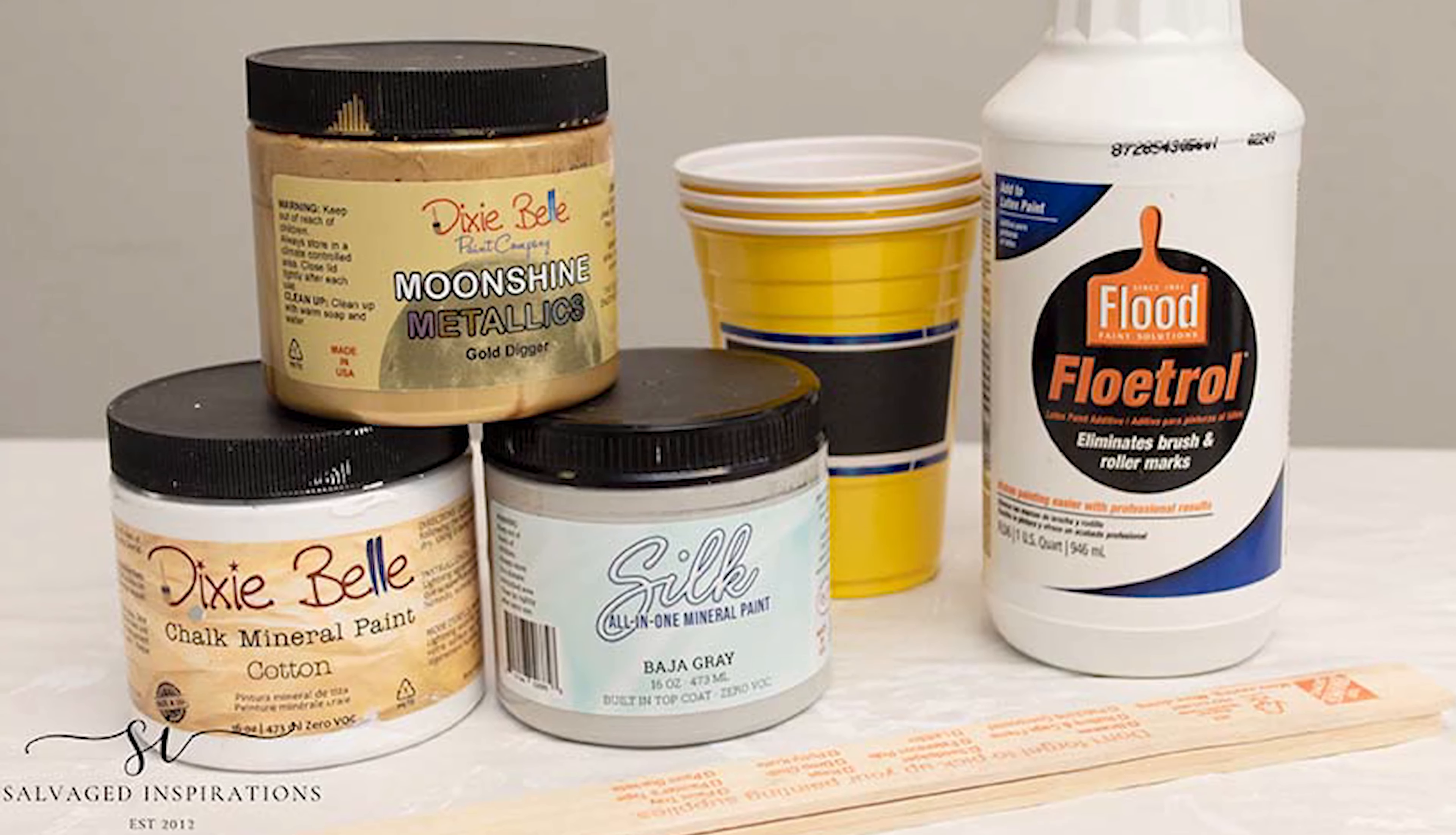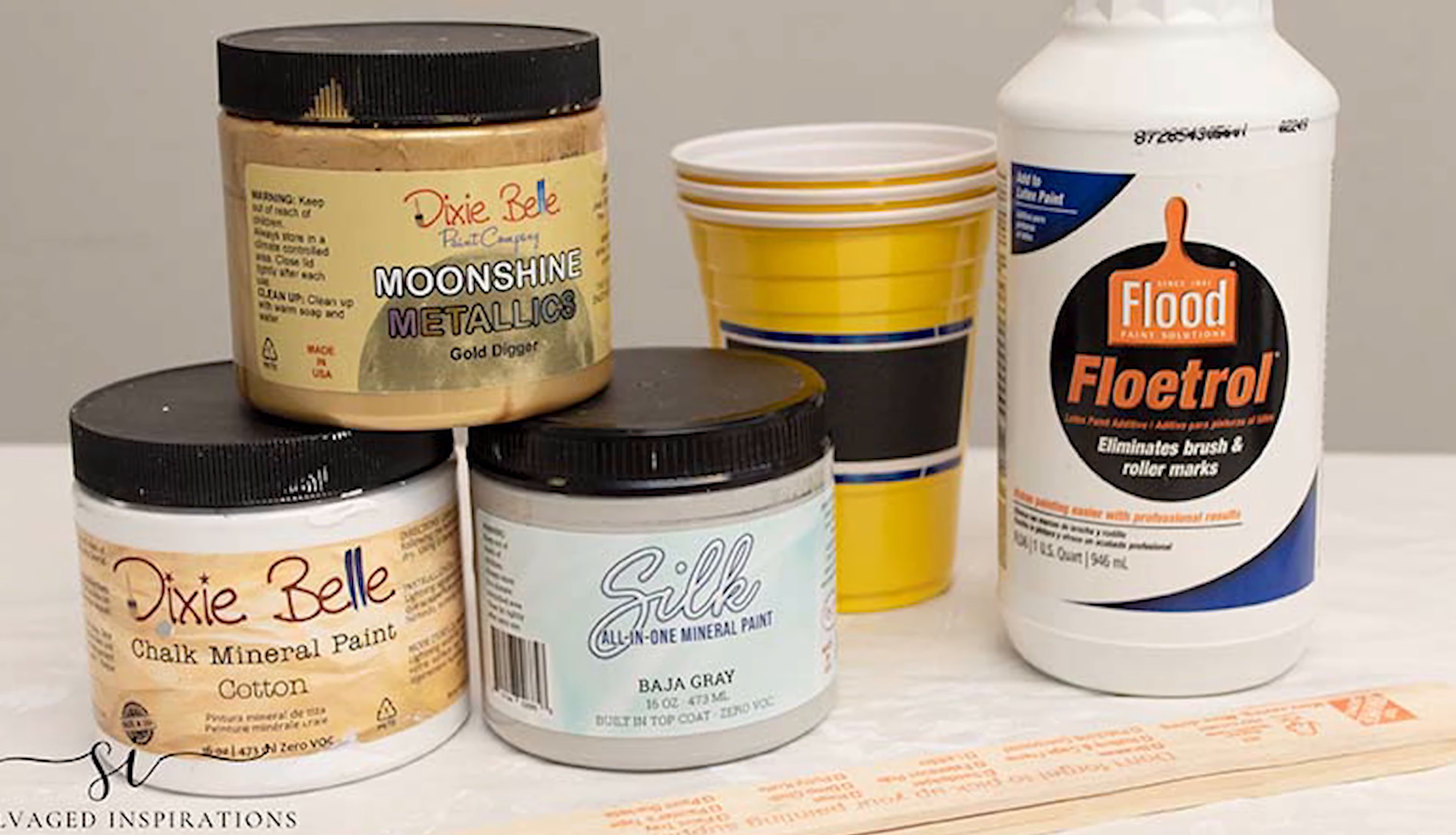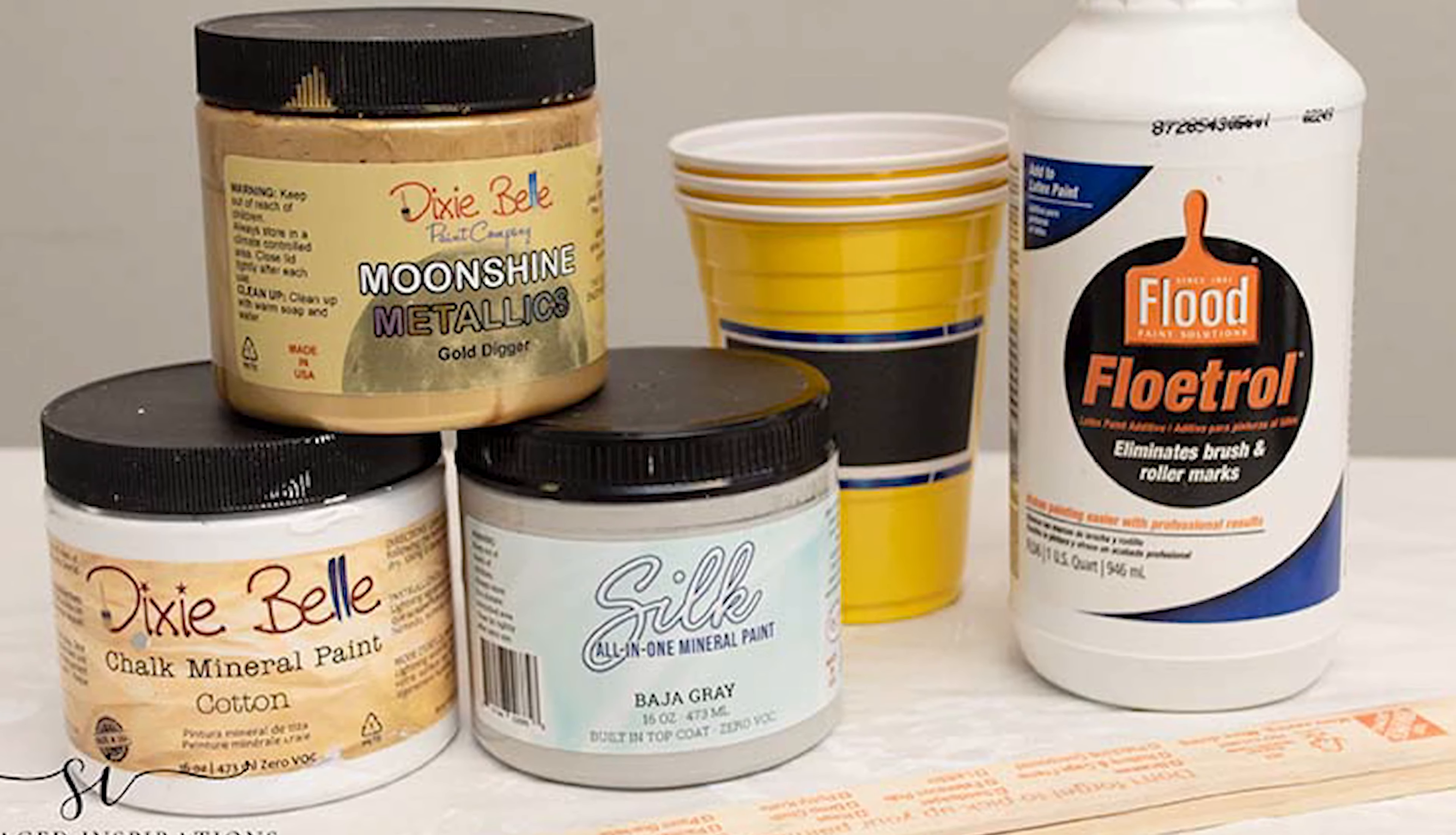To get the flow the paint needs for this finish, I mix it with Floetrol. For a beginner's paint pour, this cannot be easier. Floetrol is phenomenal. It's generally used to give paint a longer open time to eliminate brush and roller marks, but it works amazing for paint pouring as well.